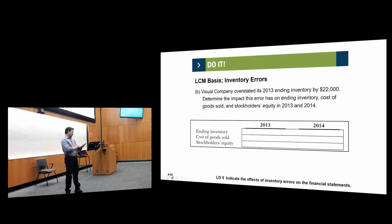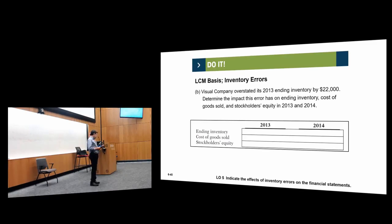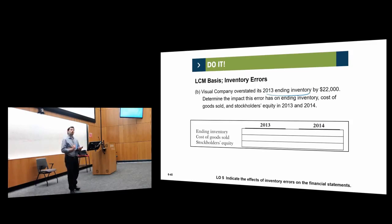Here is an example: ending inventory was overstated by $22,000 in 2013. What is the impact or effect of this error on ending inventory, cost of goods sold, and stockholders' equity in 2013 and 2014? In 2013, ending inventory will be overstated.